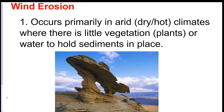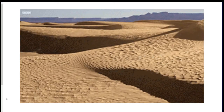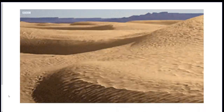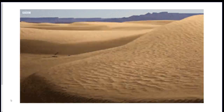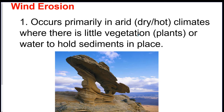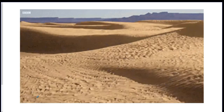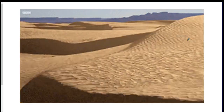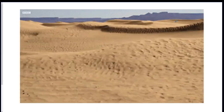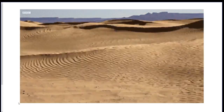You'll get a lot of wind erosion in areas that are — you guessed it — windy. The most windy areas are deserts, places that are really dry or arid. Arid means dry. Hot areas, places with not a lot of plants. This is a desert, and you can see these hills called dunes.